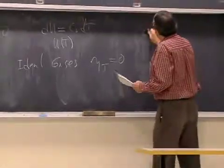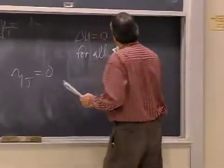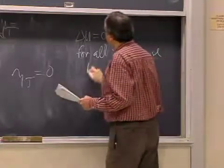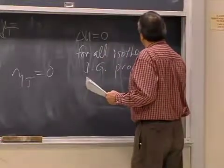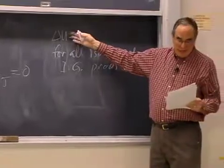So delta u is equal to zero for all isothermal ideal gas processes, and it's approximately equal to zero for all real gas processes.